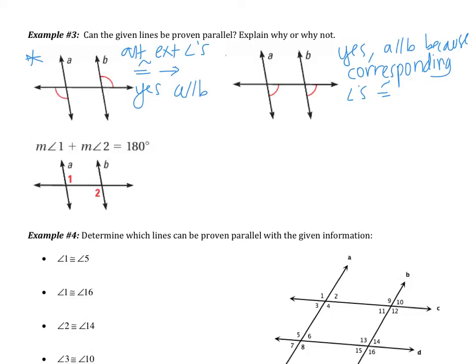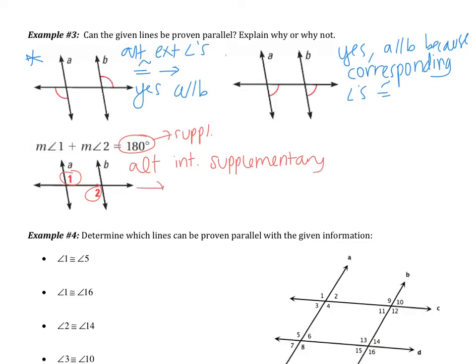For the next one, we are told that angles 1 and 2 sum to 180. Angles 1 and 2 are alternate interior angles. From last section, if parallel lines are cut by a transversal, the alternate interior angles are congruent. In this case, the alternate interior angles are not congruent — they're supplementary. Alternate interior angles need to be congruent for the lines to be parallel, not supplementary. So this tells us: no, we cannot prove that a is parallel to b. The only angle pair allowed to be supplementary to prove lines parallel is consecutive interior.